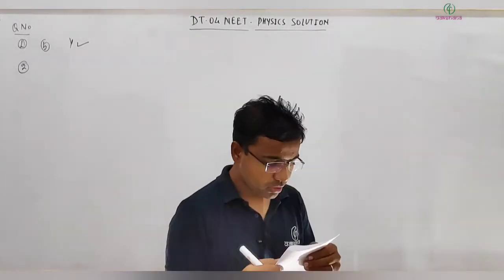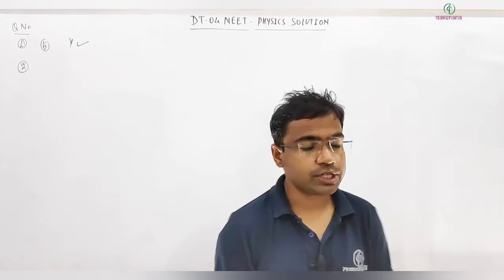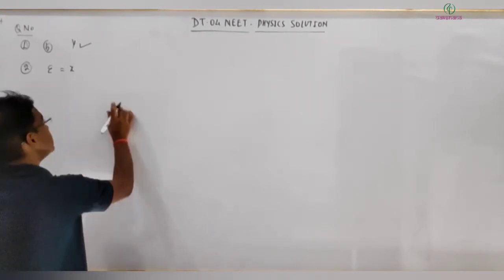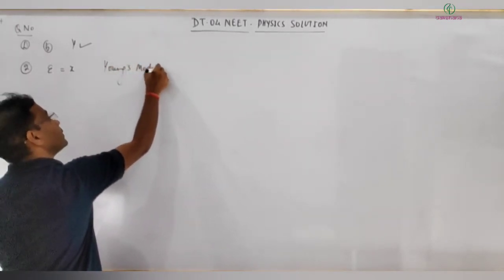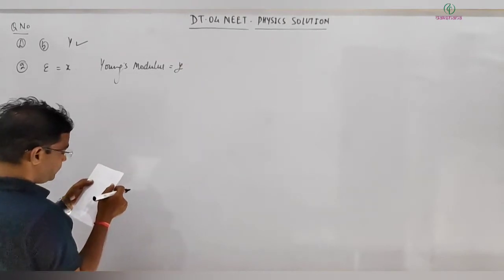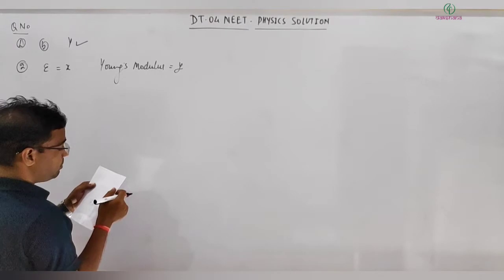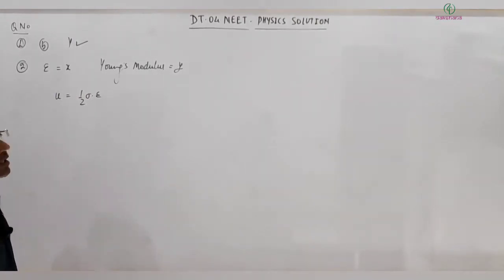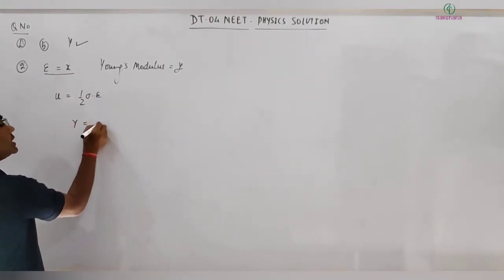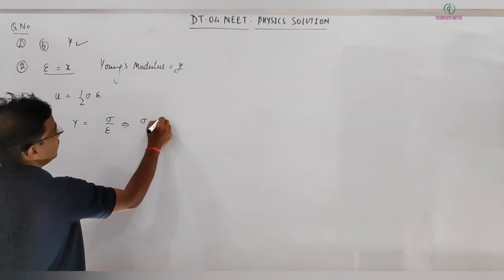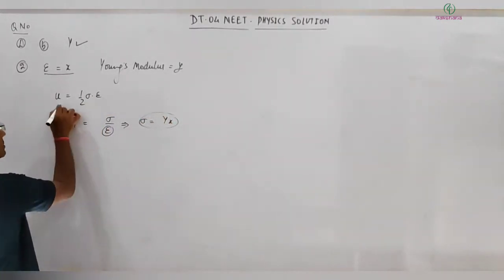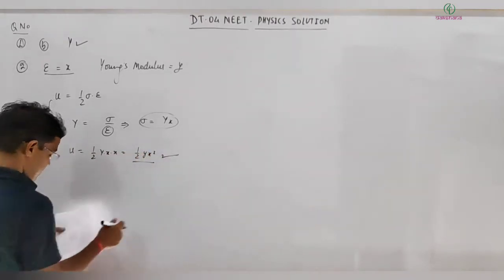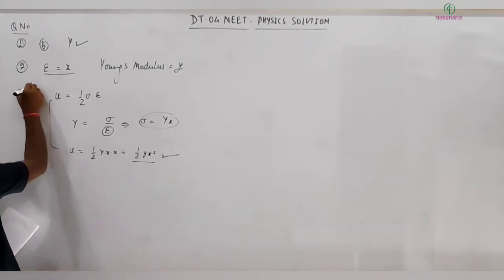Question 2: If a longitudinal strain X is produced in a wire of Young's modulus Y, find the energy stored per unit volume. Energy density equals (1/2) × stress × strain. Here strain ε = X and from Y = stress/strain, we get stress = YX. Substituting, energy density U = (1/2) × YX × X = (1/2)YX². The answer matches option D.